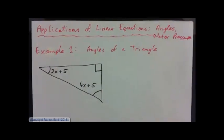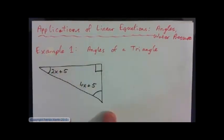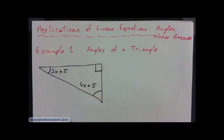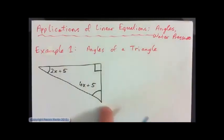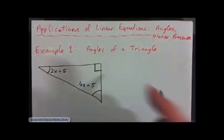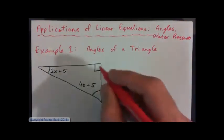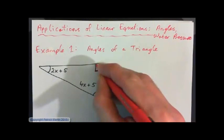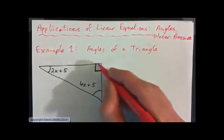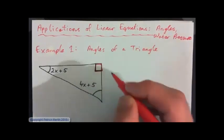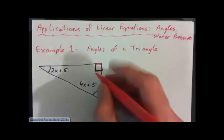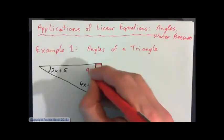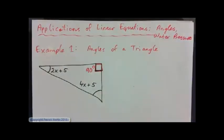You've got a triangle here and it says 2x plus 5 beside this angle and 4x plus 5 beside this angle. When you've got a corner drawn as a completed square, that means this corner is a perfect square corner, and its angle measure is 90 degrees. So this angle here is 90 degrees — a perfect corner.